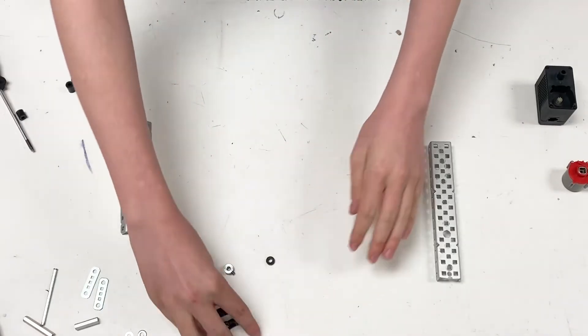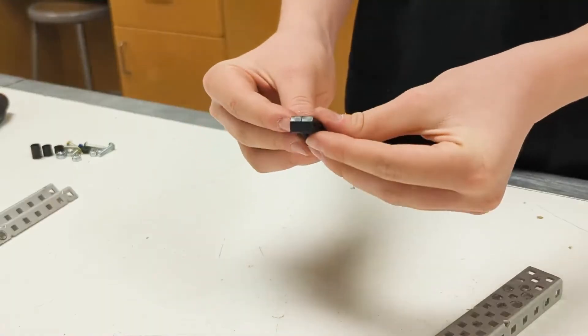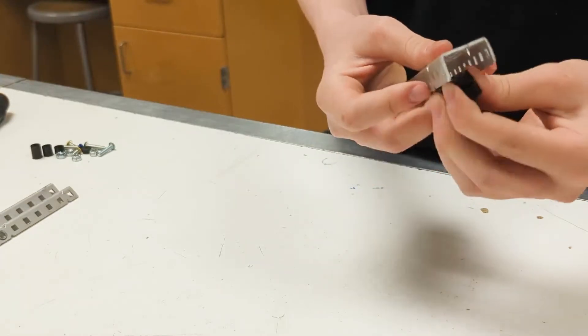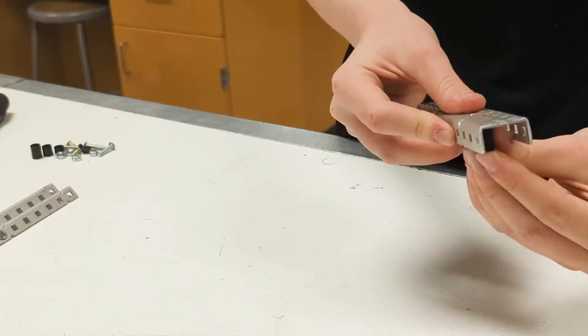The first thing that we're going to use are the two small bearings. You're going to clip them in together, that's how they should be used. You're going to place them on the second hole back on the inside.